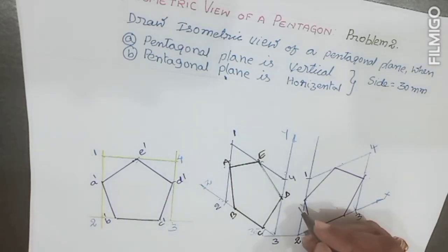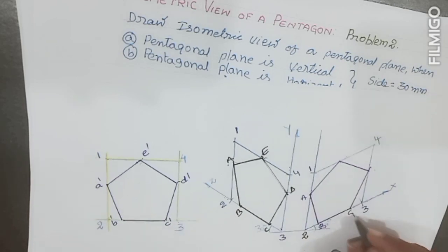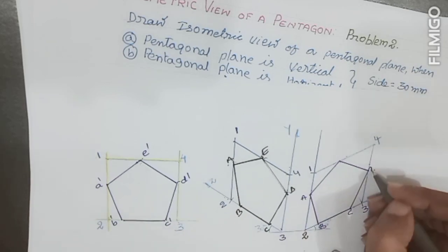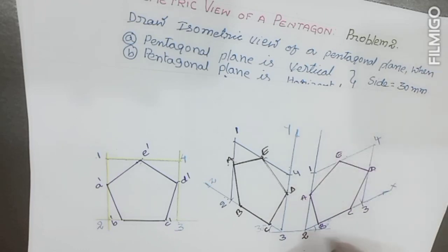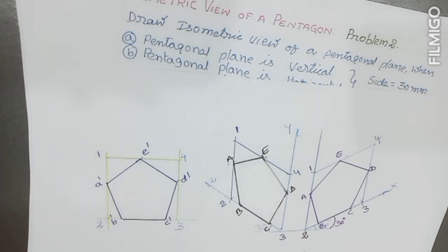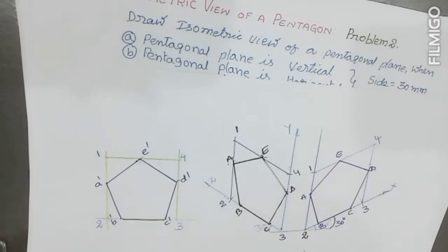Join the points C, B, C, D, E in sequential order to complete the pentagon. This completes the construction of the pentagon plane when the face is vertical.